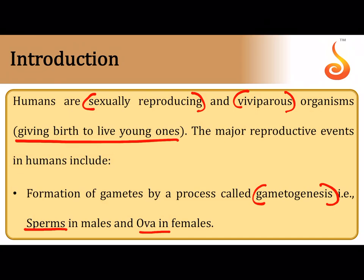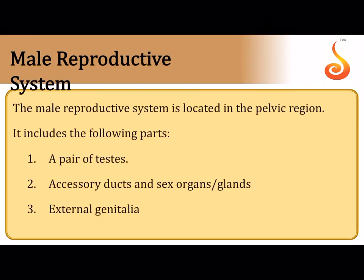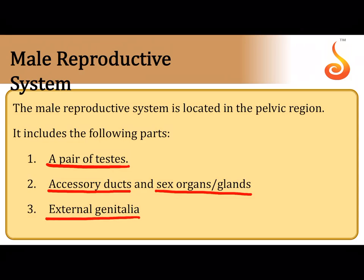Looking at the male reproductive system, the three principal components are: a pair of testes (the primary sex organ), accessory ducts, and accessory sex glands. Lastly, we have the external genitalia. Accessory ducts and glands help in conveying the sperm from the testis to the outside.